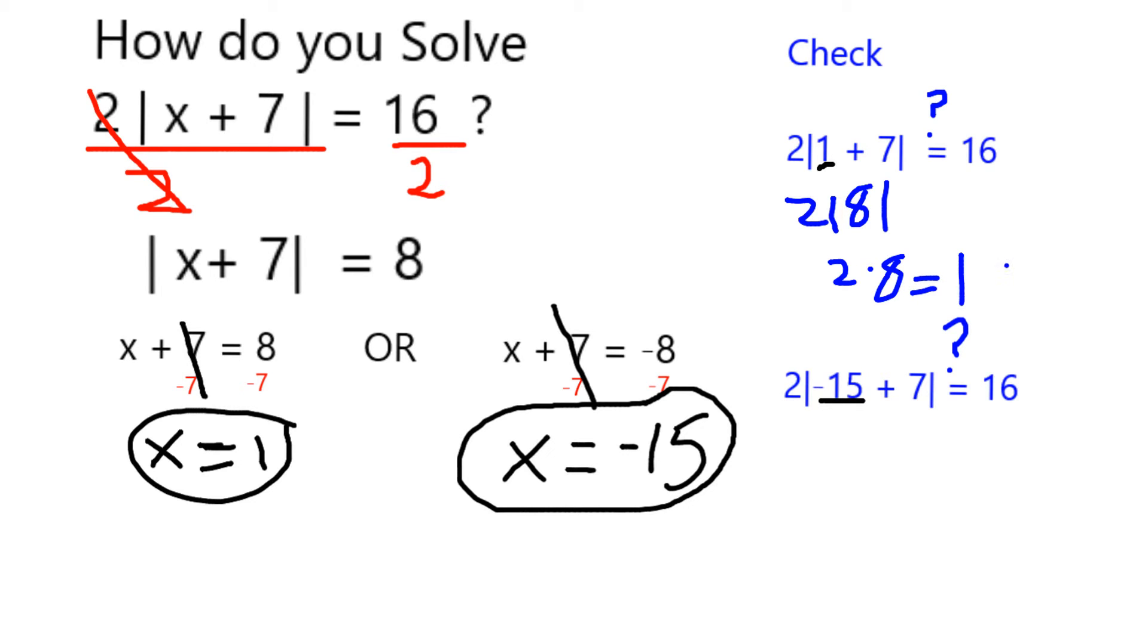And then if I plug in the negative 15, that's going to give me a negative 8 inside the absolute value symbols. So it's going to be 2 times absolute value of negative 8, which again is equal to 2 times 8. And that is equal to 16.